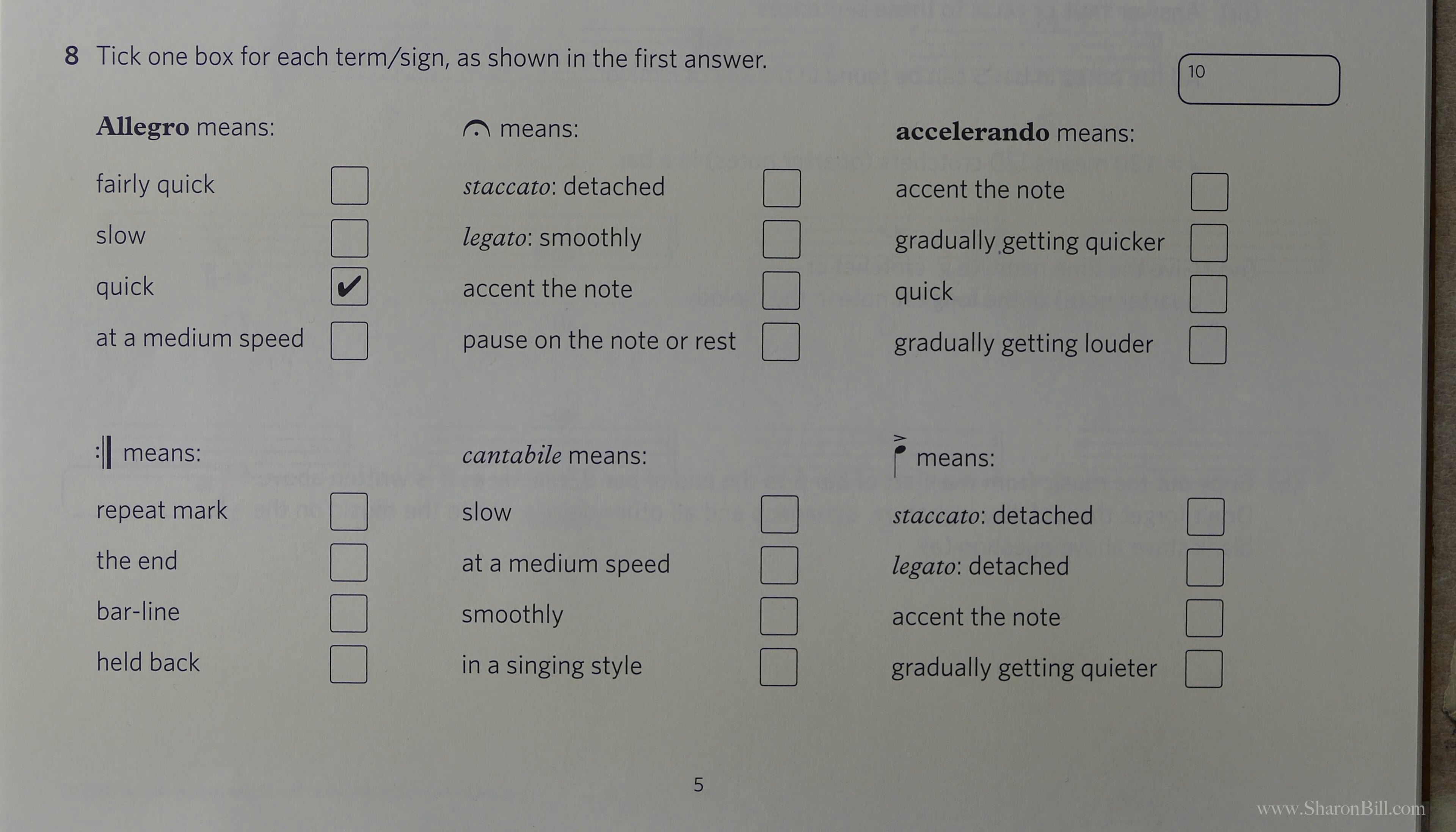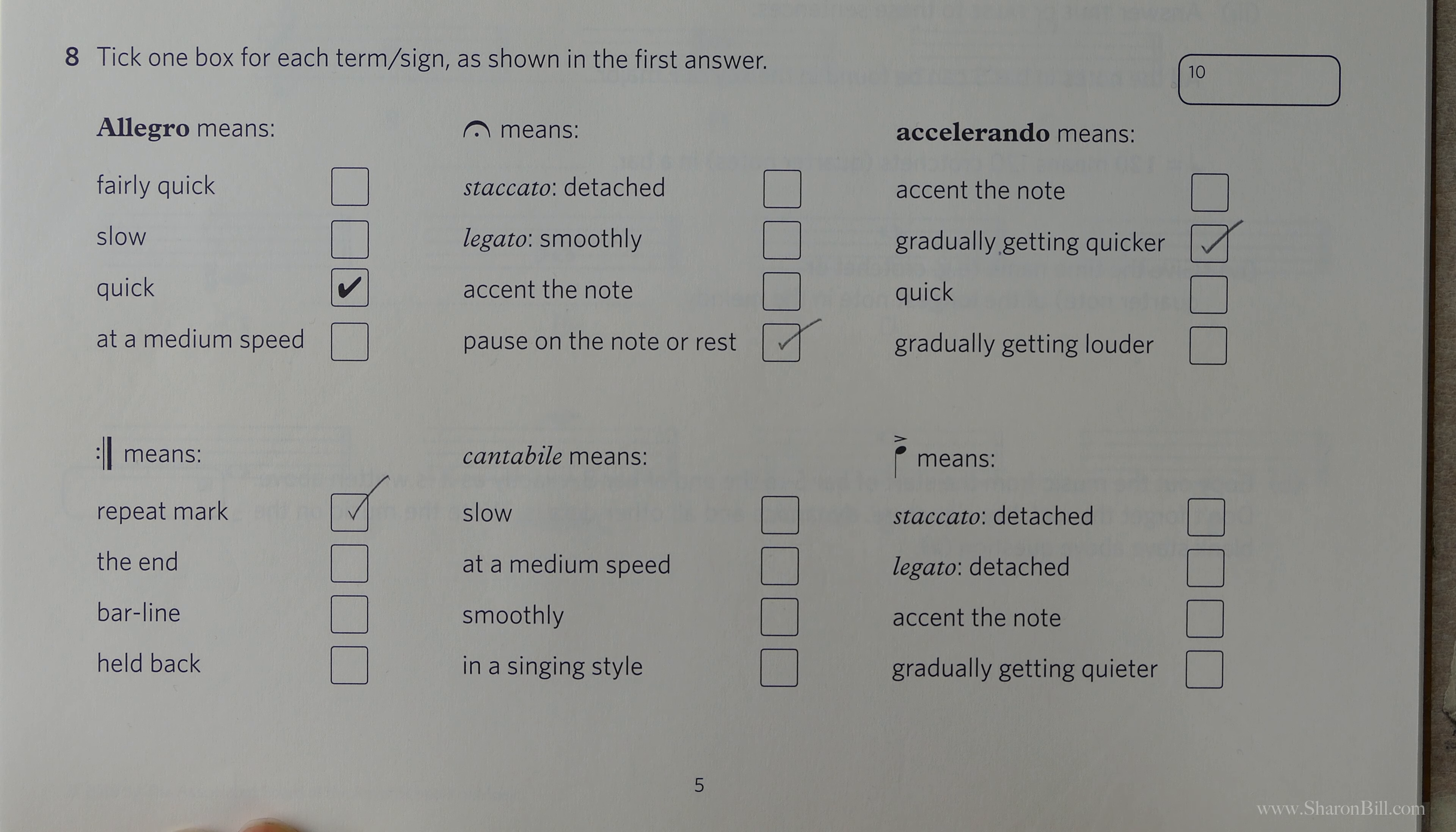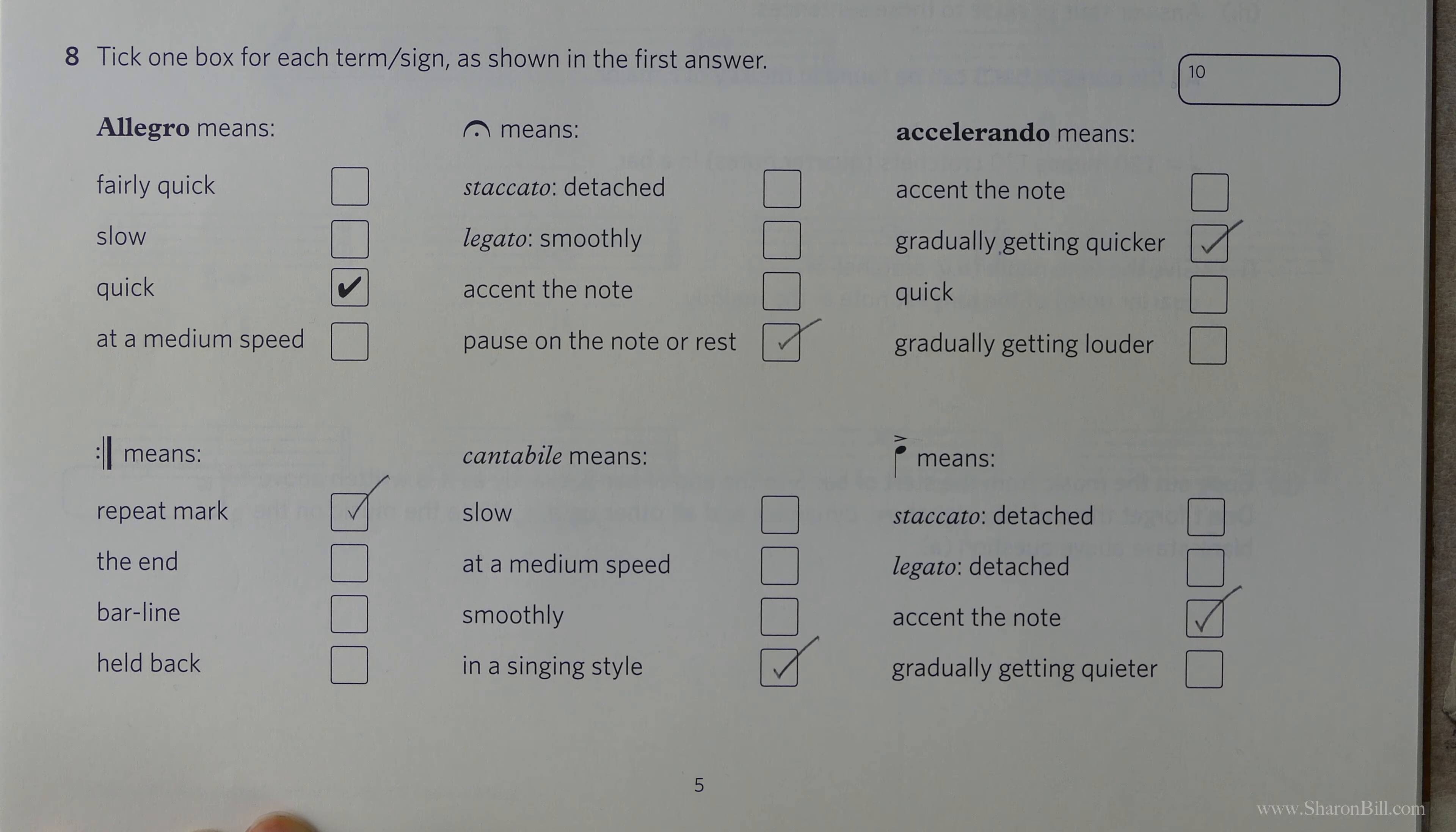So let's have a go and check these through. Allegro means quick. Here, this is a pause mark. It's also known as a fermata, so that's a pause mark there. Accelerando is gradually getting quicker. That's not a difficult one to work out. You can see the root meaning of the word accelerate there, so gradually getting quicker does make sense. Here we have a repeat mark, so where you'd bounce between those to repeat a section. Cantabile means in a singing style. Just find a way of revising that. I think it's quite a beautiful lyrical sounding word to my mind, so in my abstract thinking that makes a connection between the definition and the word. Just however your brain works, just find a way of remembering that. And then here we have this little sort of arrow over the top of the note, and that means an accent, so we accent the note.